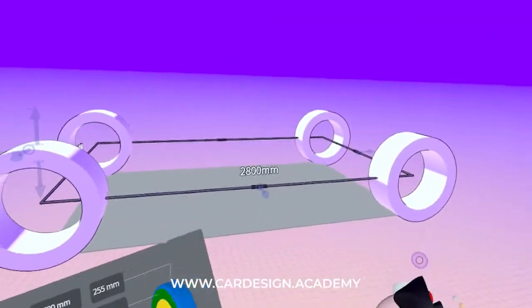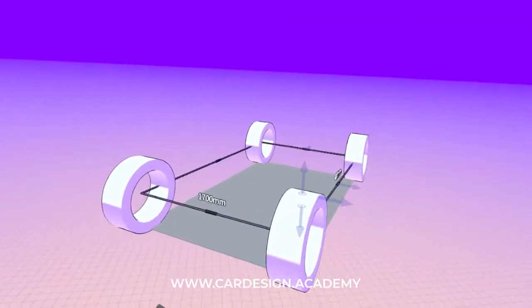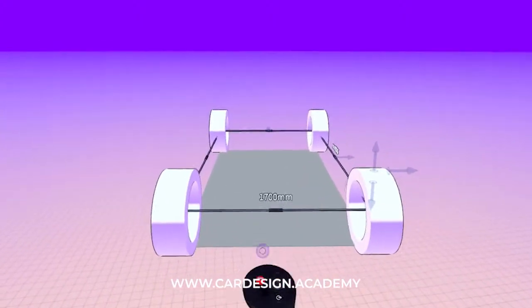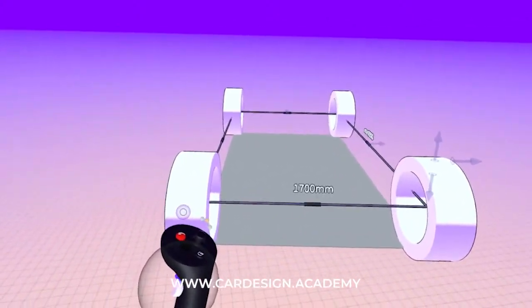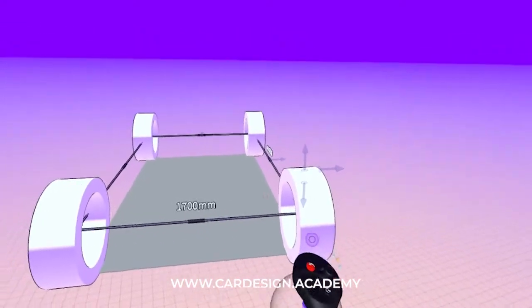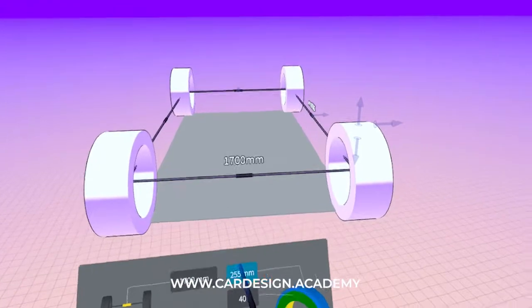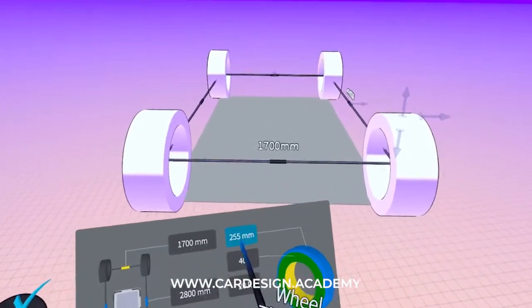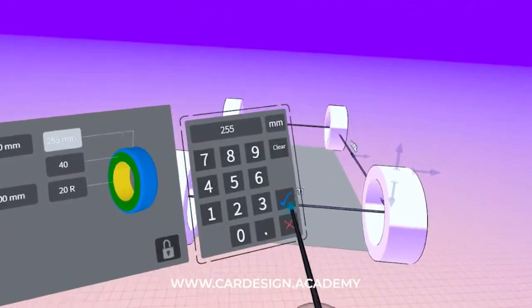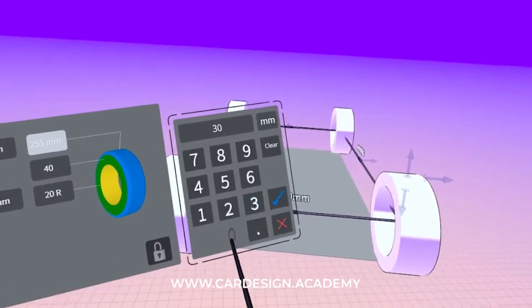This would be like a typical sports car wheelbase. 1,700 is the track. You can see it's actually measured at the tire center to tire center. So if you want an overall width close to two meters, you're going to want to have it at about 1,700. And then I can bump the tire width to 300.